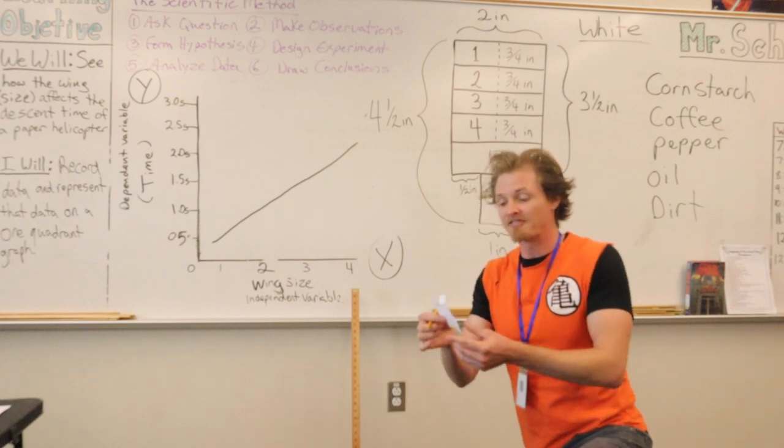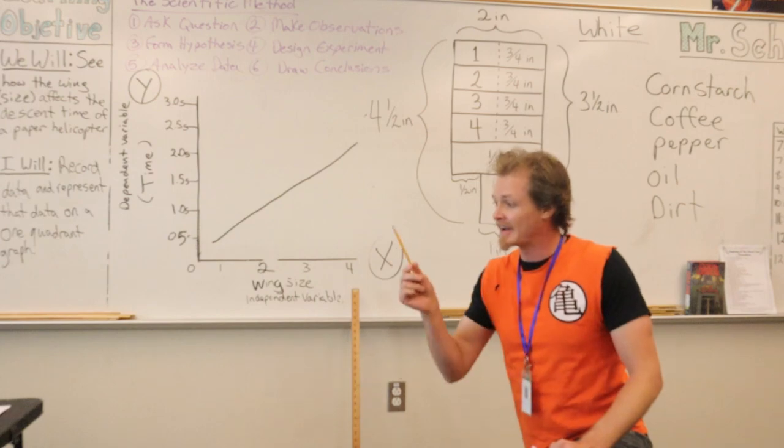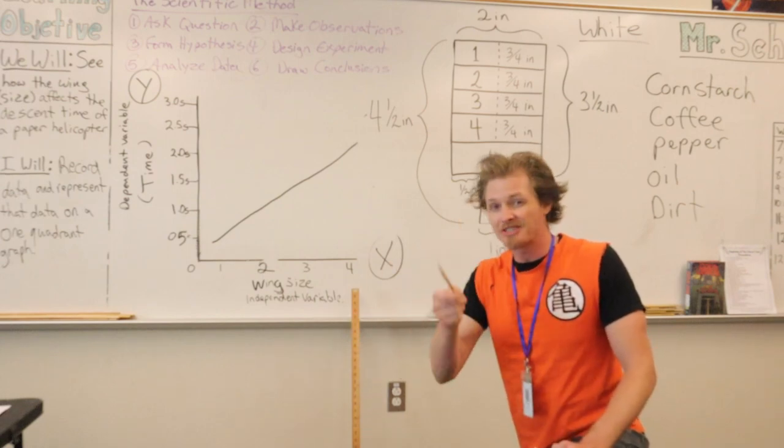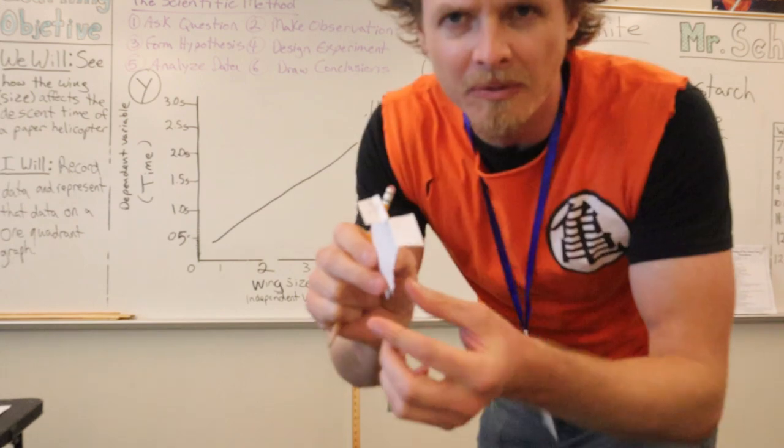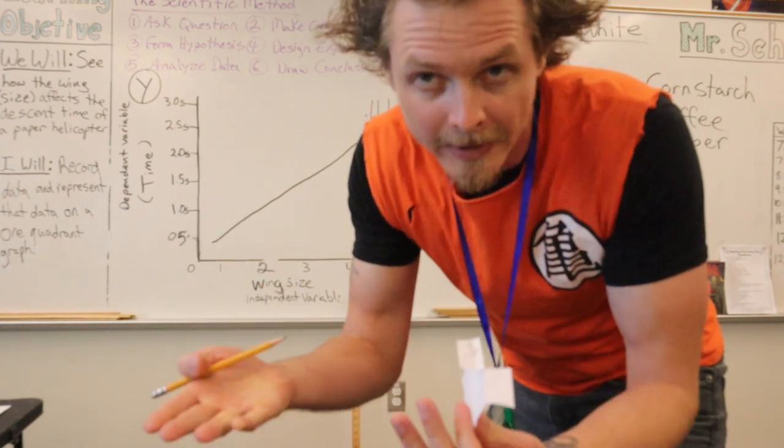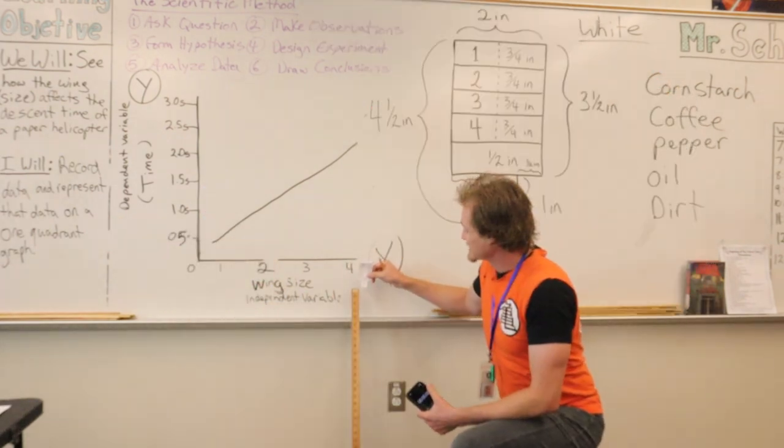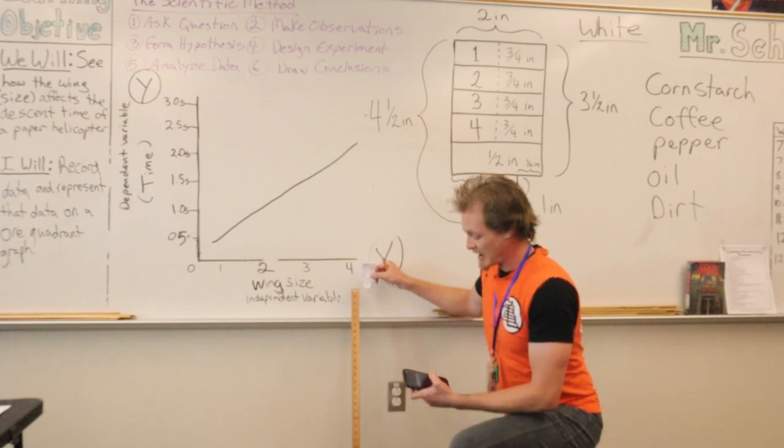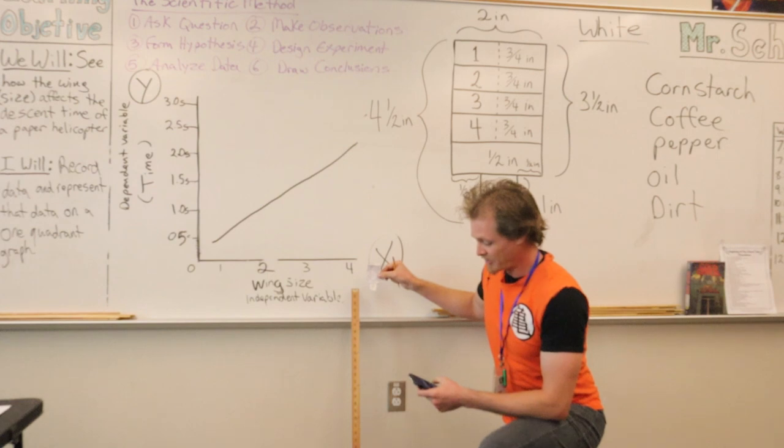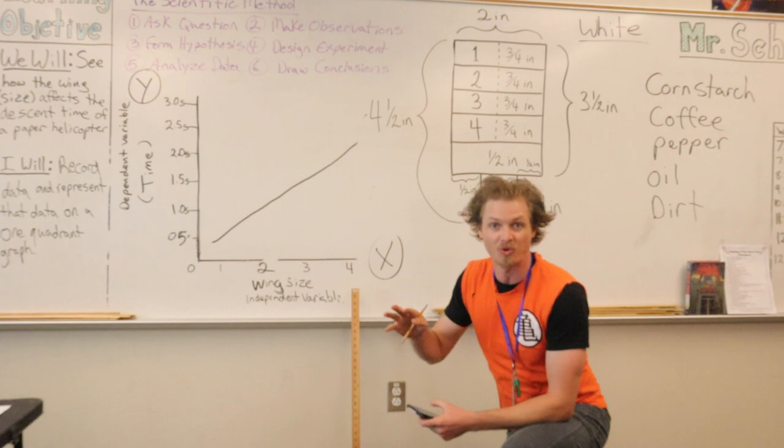We're going to start with our trials. I have my helicopter. I have my ruler. I have a pencil. I have my data chart. I have a stopwatch. So let's start collecting data. Now I want to make sure the wings on my helicopter, one wing is going this way and one wing is going that way. Helicopter. I want the base or the bottom of my helicopter right at 36 inches. So right about there. And I'm going to use the stopwatch on my phone. A little countdown. 3, 2, 1, go.